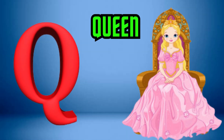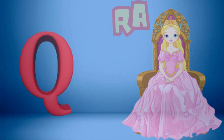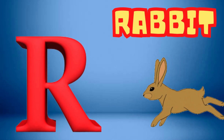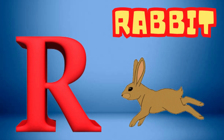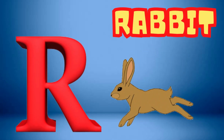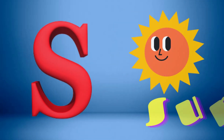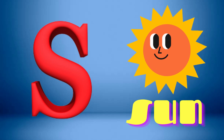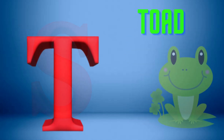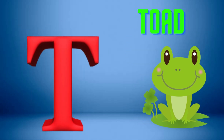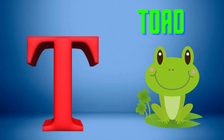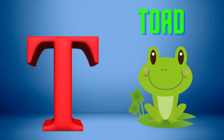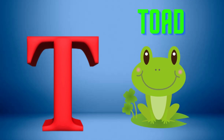Q is for Queen, Q-Q-Queen. R is for Rabbit, R-R-Rabbit. S is for Sun, S-S-Sun. T is for Toad, T-T-Toad.